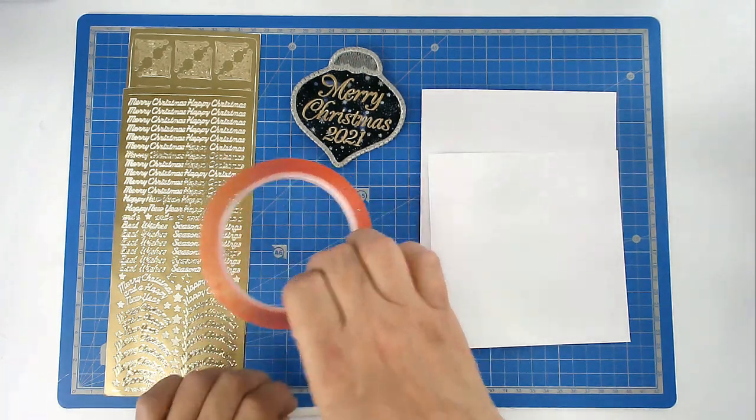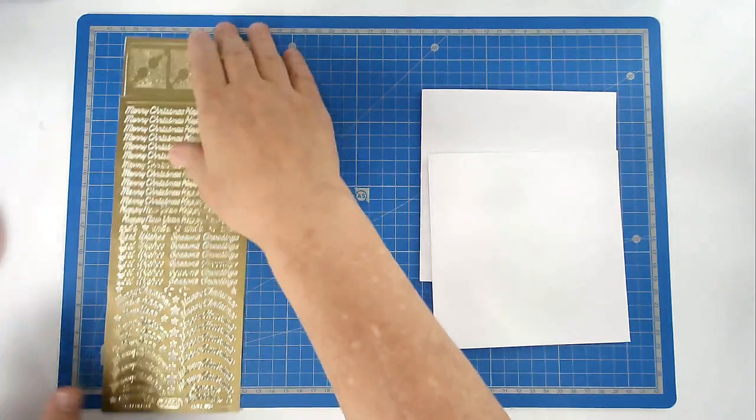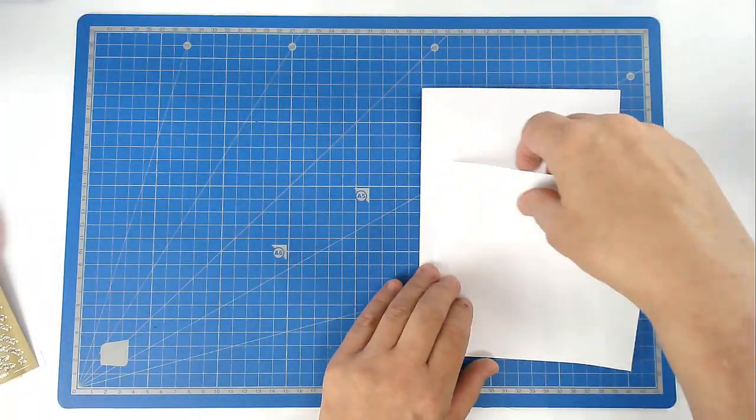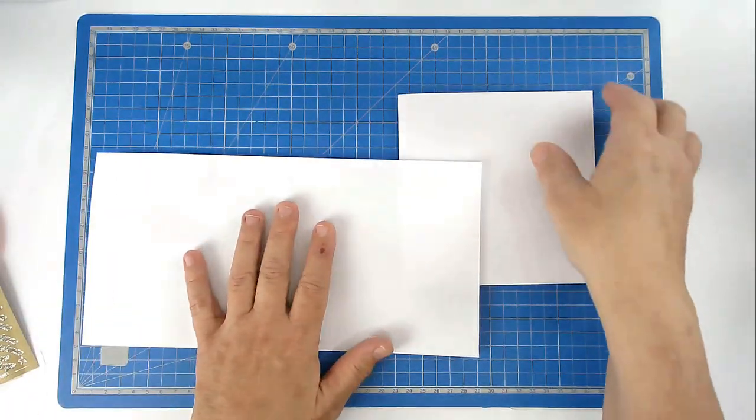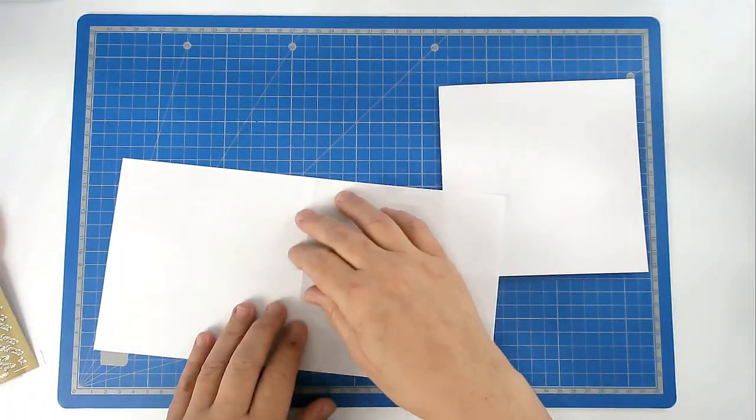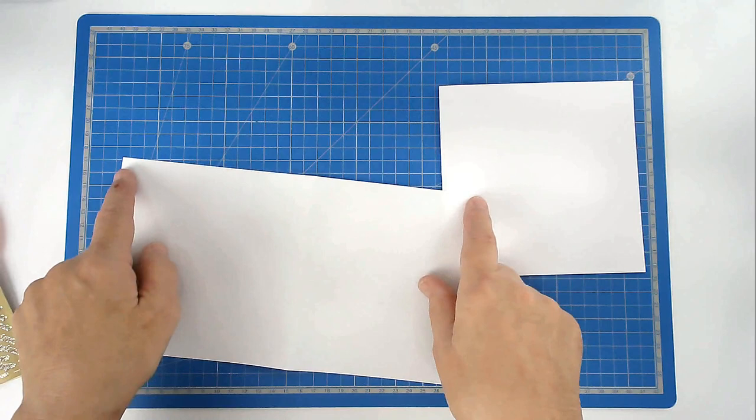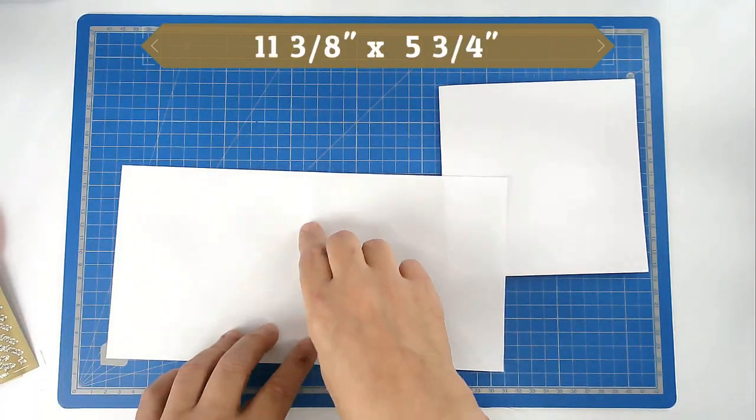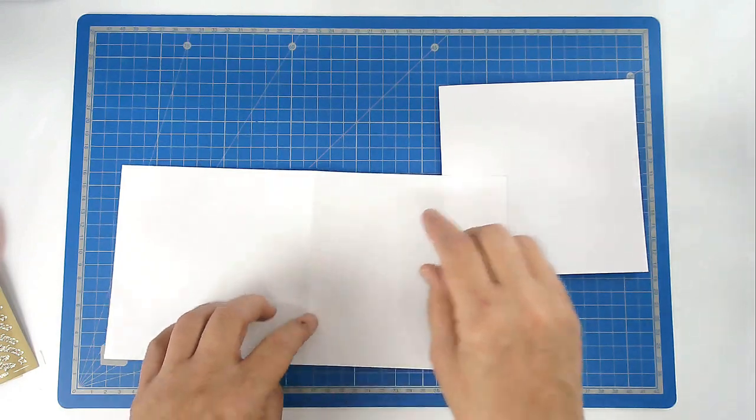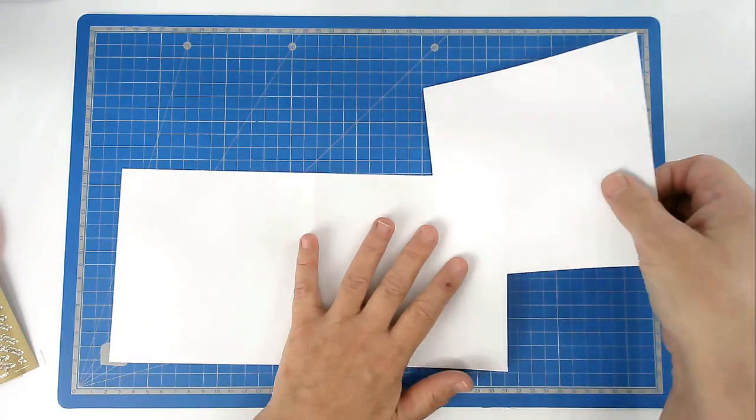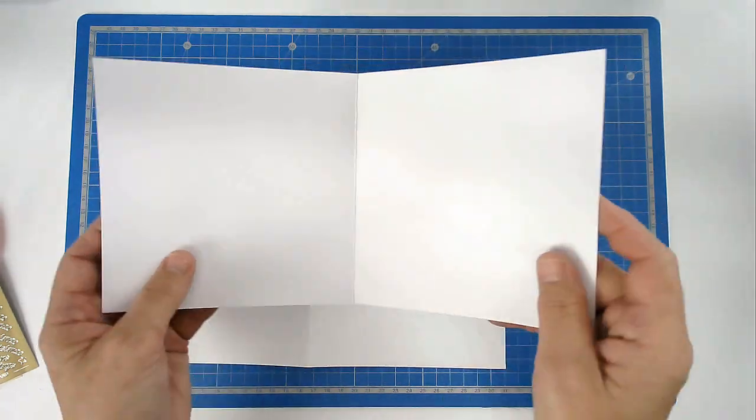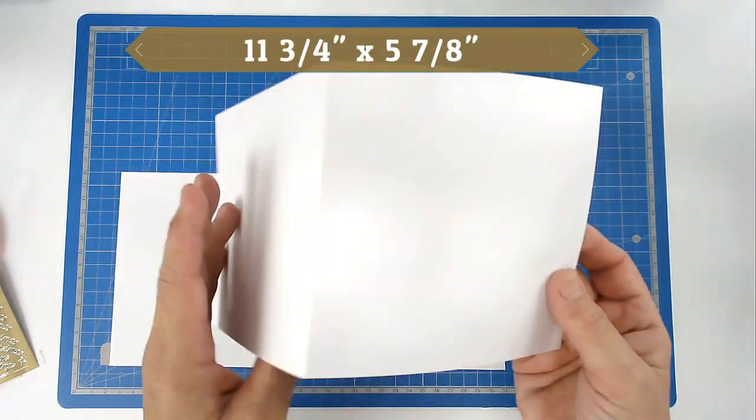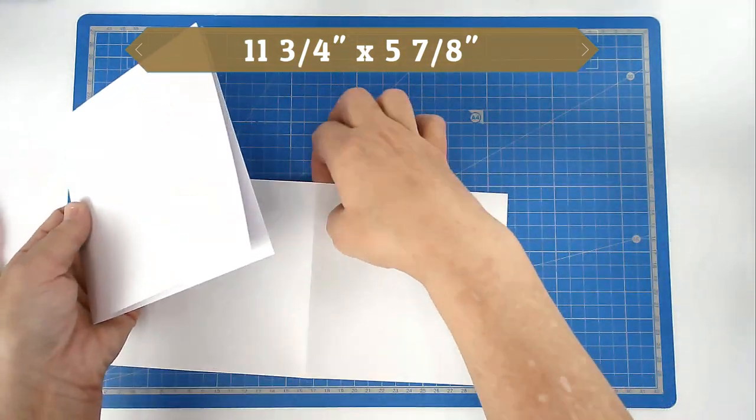The first thing you're going to do is cut your paper insert to 29cm by 14.5cm. I will add the conversions and dimensions in the video description below. I've cut my card to 30cm by 15cm and then just folded them in half.